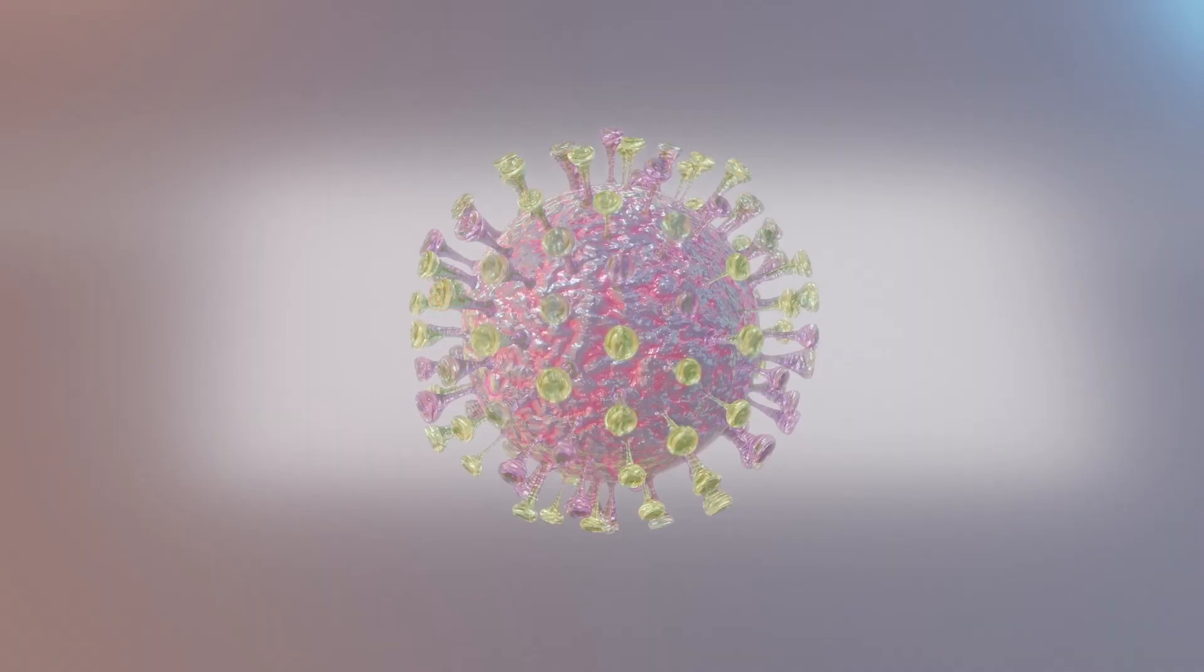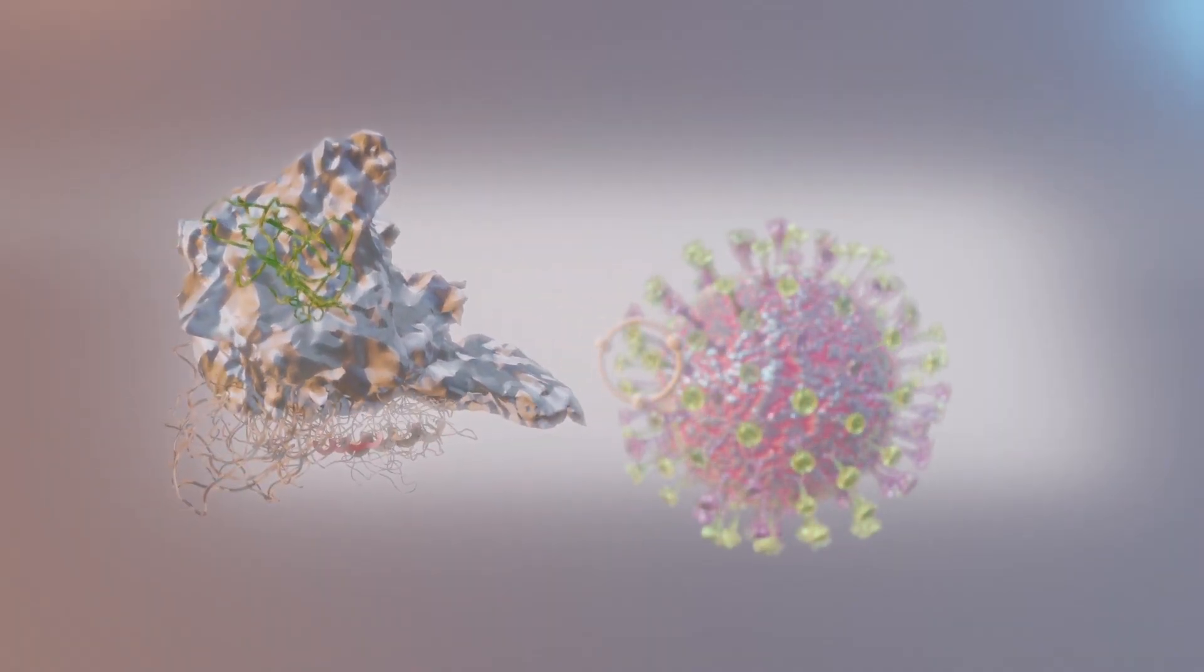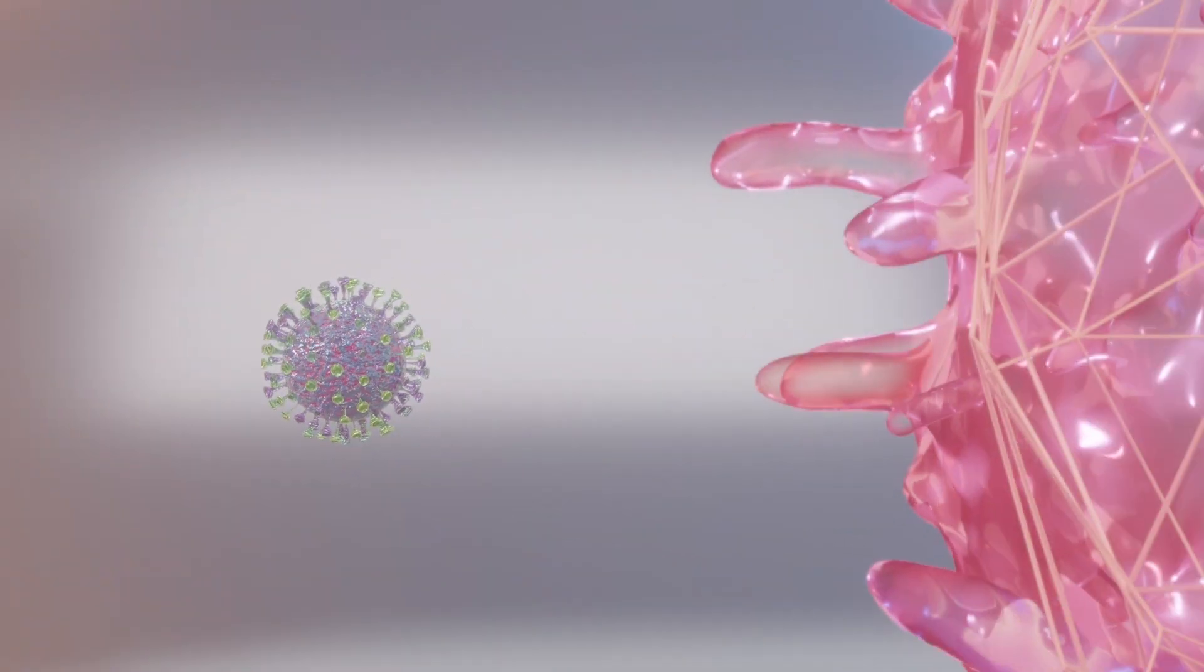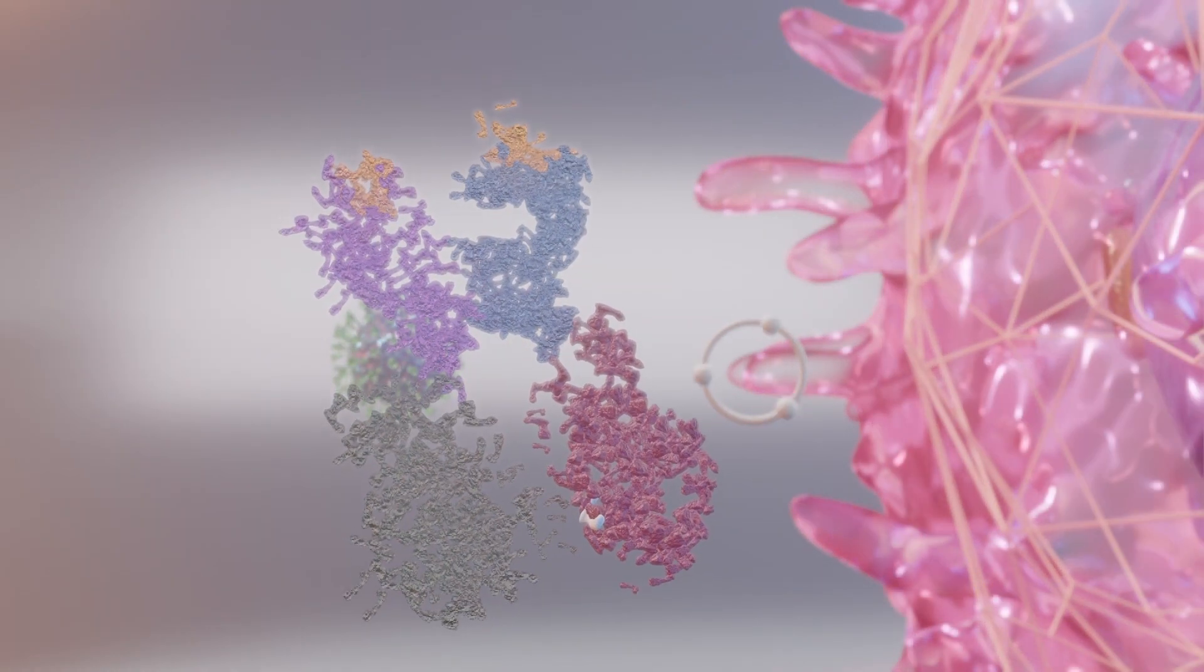A previous study published in Science found the virus' spike protein has two receptor binding domains, or RBDs, facing downward and another facing upward. These allow the virus to bind with and invade human cells.